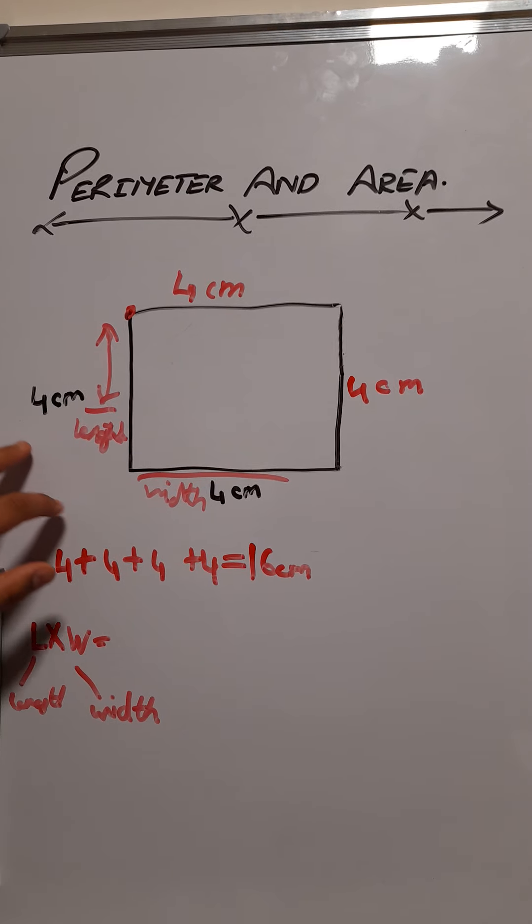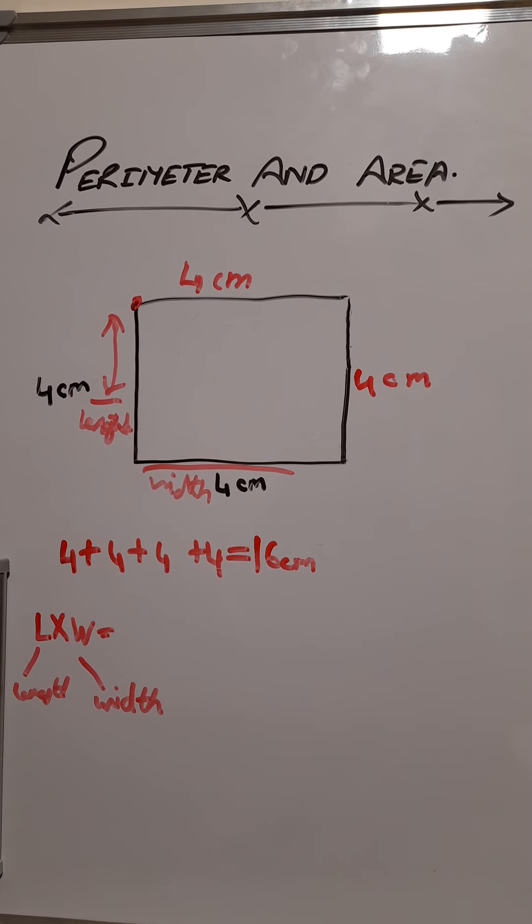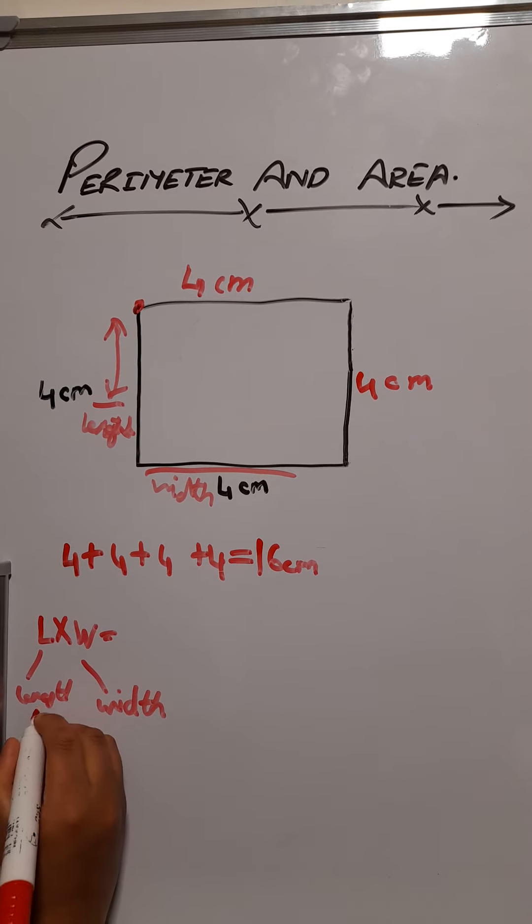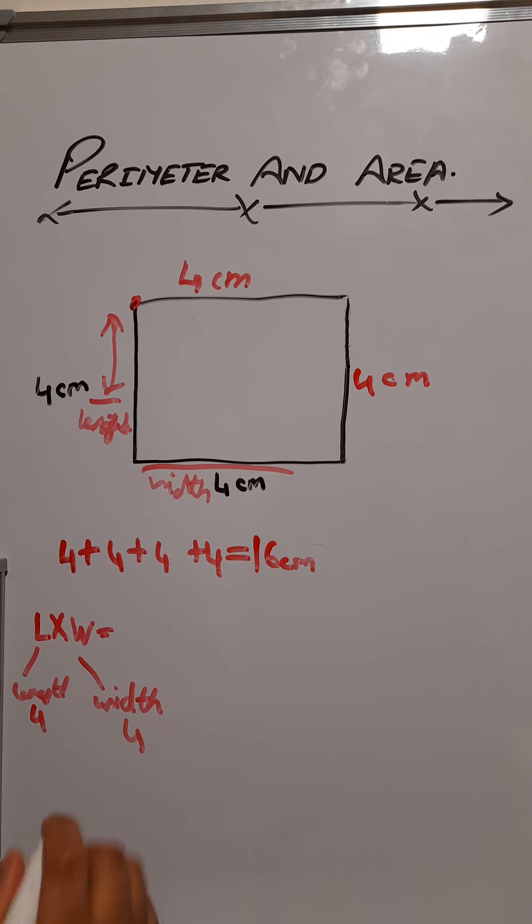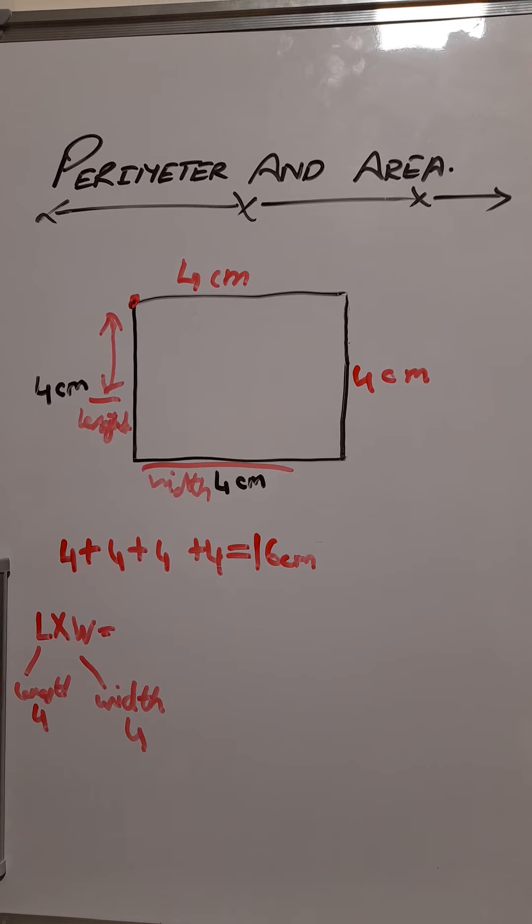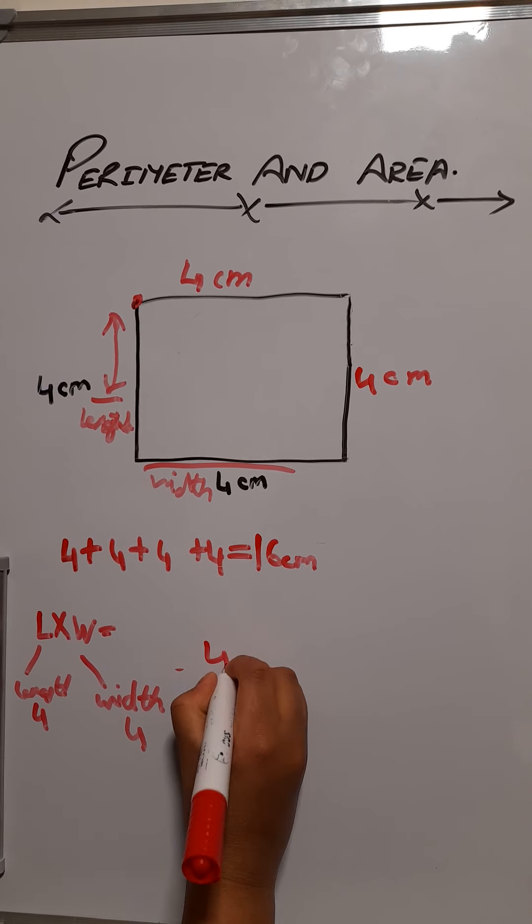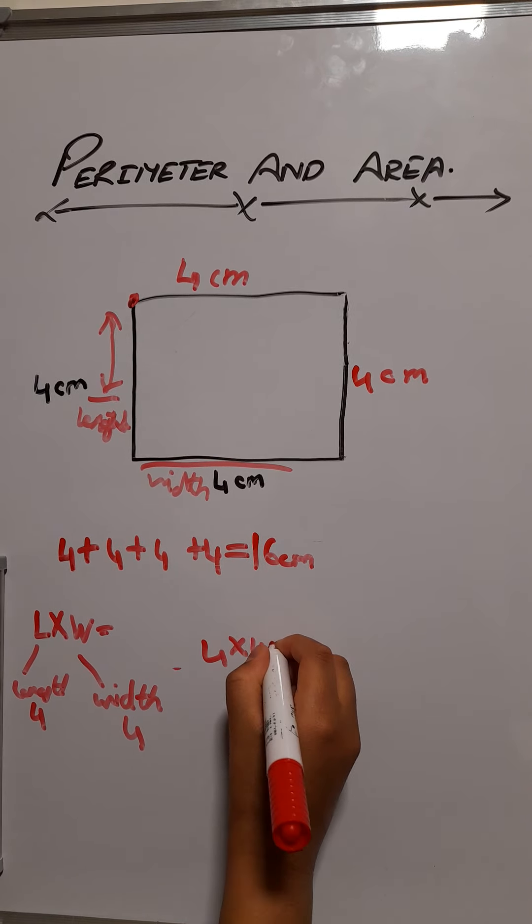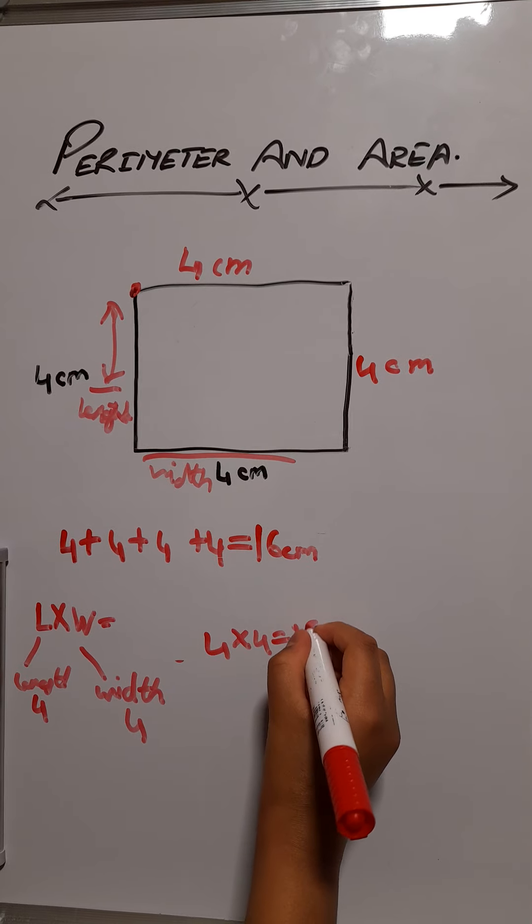As we know the length and the width, the length is 4 and our width is 4 too. As we said, we have to times it. So now we will do 4 times 4, and this will give us the answer of 16.